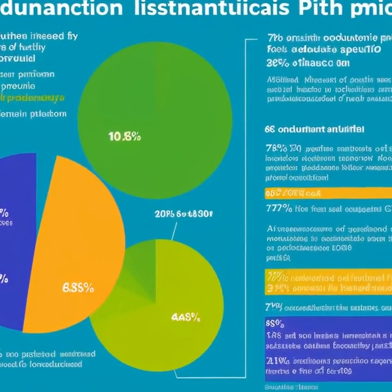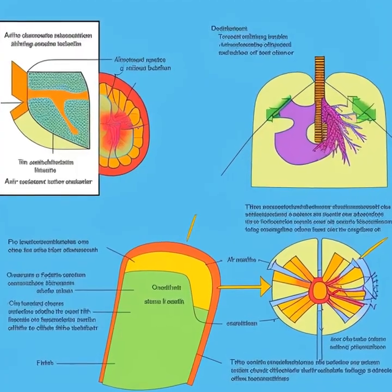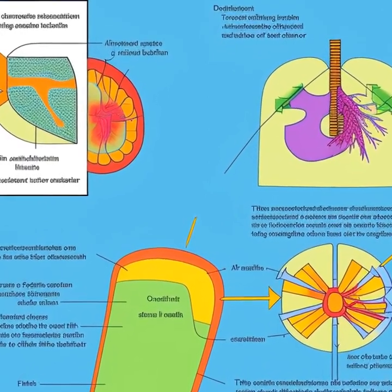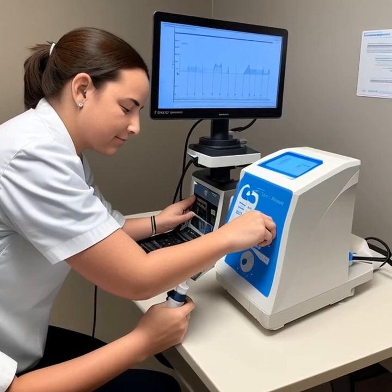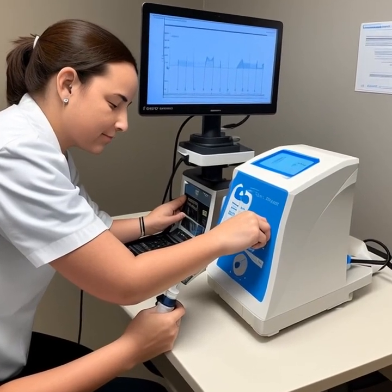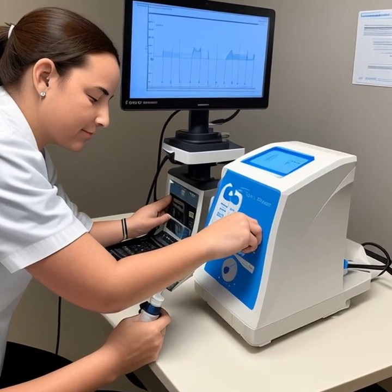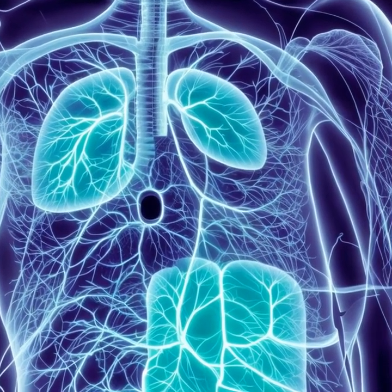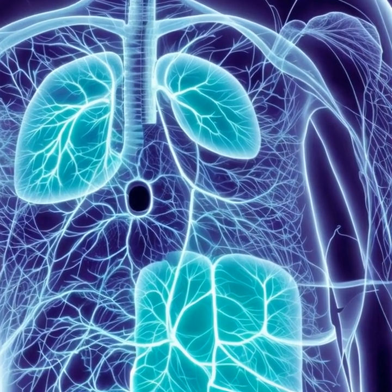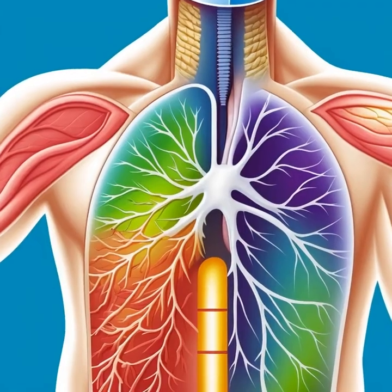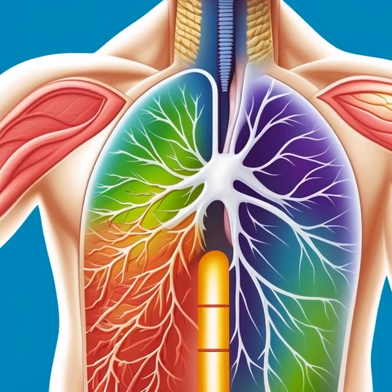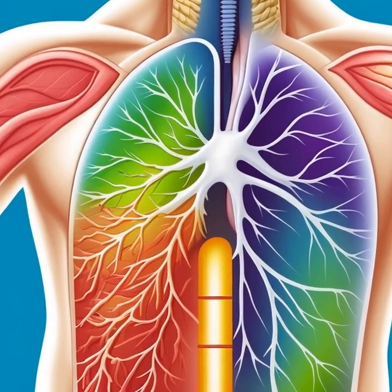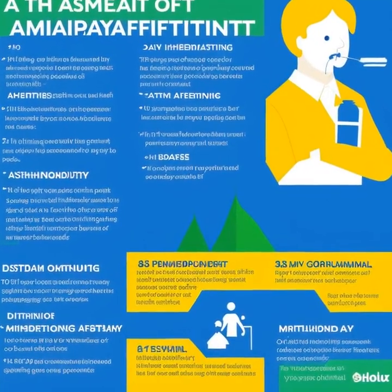Additionally, the increased production of mucus, as well as the swelling and narrowing of the airways, can obstruct the flow of air in and out of the lungs. When the airways become inflamed and constricted, it becomes more difficult for air to move through the respiratory system. This can lead to a reduction in lung function, as measured by tests like spirometry.